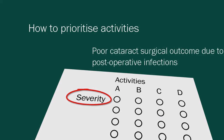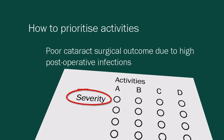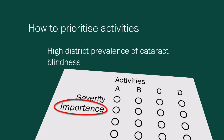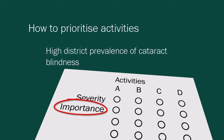Severity: for example, if cataract surgical outcome is poor due to high post-operative infections, a severity score of five points would be valid. Importance: this category is based on local need, so for example a high district prevalence of cataract blindness might be awarded three points.